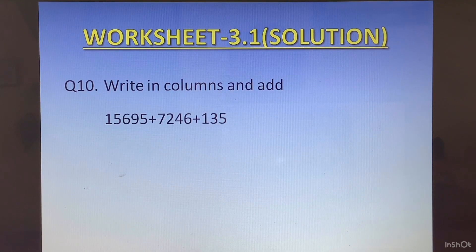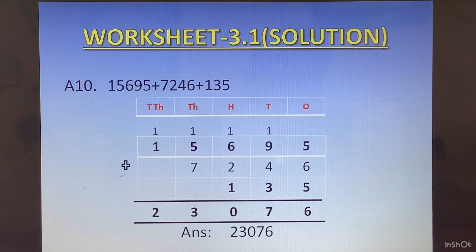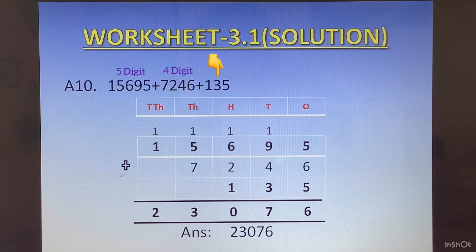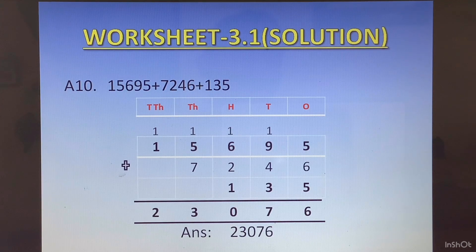Question 10: Write in columns and add. Here we have a different number of digits in each number. The first number is 15695, which is a 5-digit number. The second number is 7246, which is a 4-digit number. And the third number is 135, which is a 3-digit number. We have to ensure that we write them properly as per the place value chart.